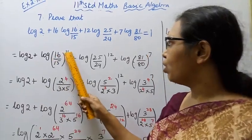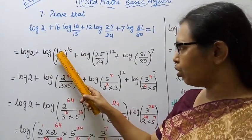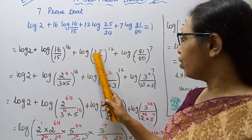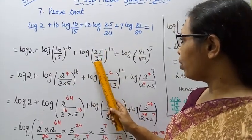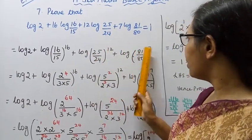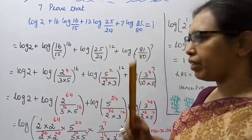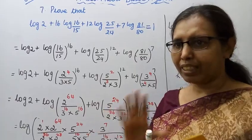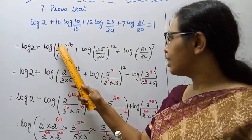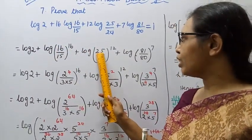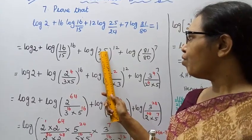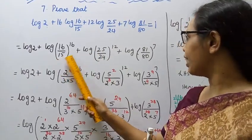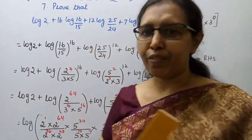Now let's do the prime factorization of each number. 16 in the numerator and denominator: 2 into 2 into 2 into 2 into 2. 25 is easy — 25 is 5 squared. 15 is 3 into 5. All of this is prime factorization.